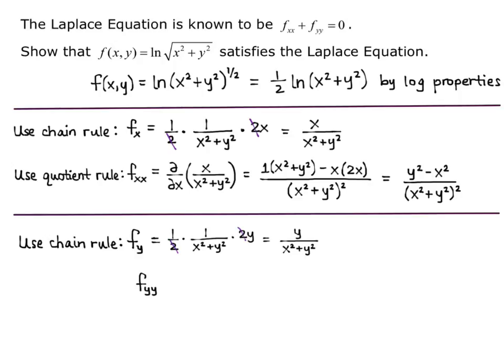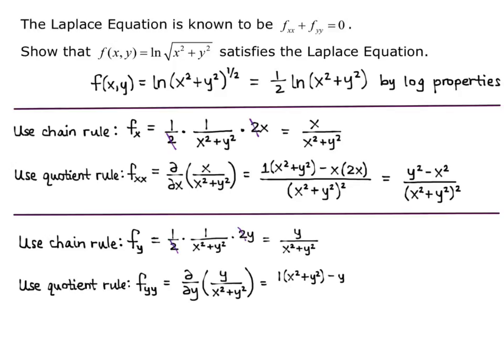Now f sub yy is the partial derivative with respect to y of y over x squared plus y squared, so I have to use the quotient rule. The derivative of the top is 1 times the bottom x squared plus y squared, minus the top y times the derivative of the bottom which is 2y, all over the denominator squared, x squared plus y squared quantity squared. Simplifying and combining like terms, I get x squared minus y squared over x squared plus y squared quantity squared.